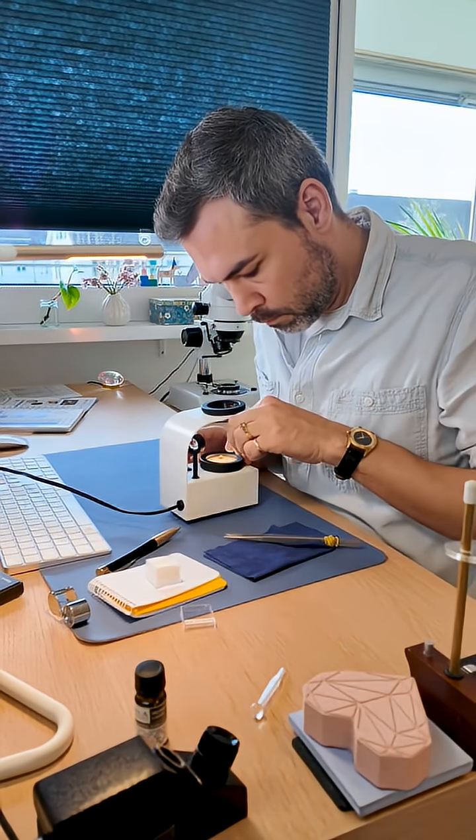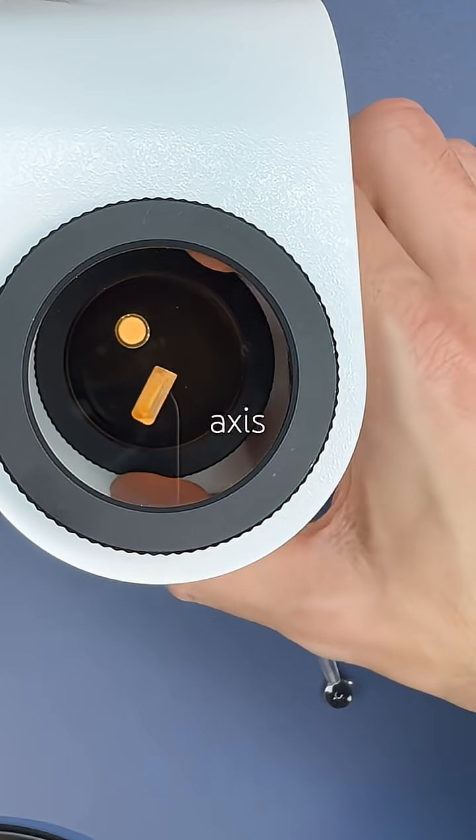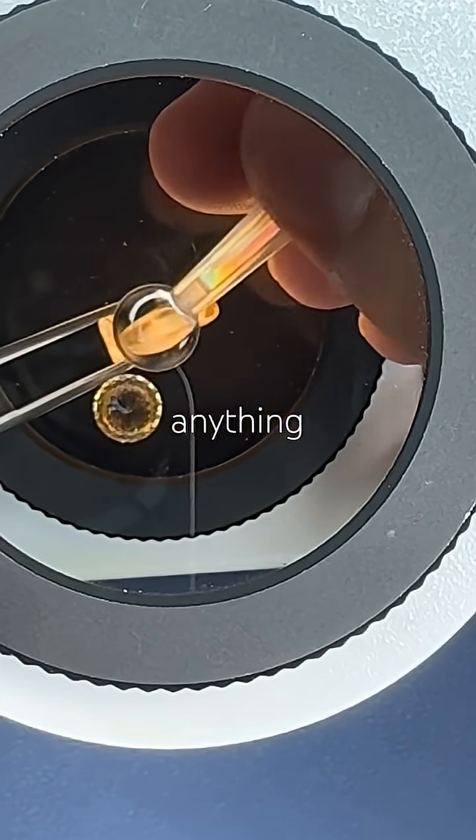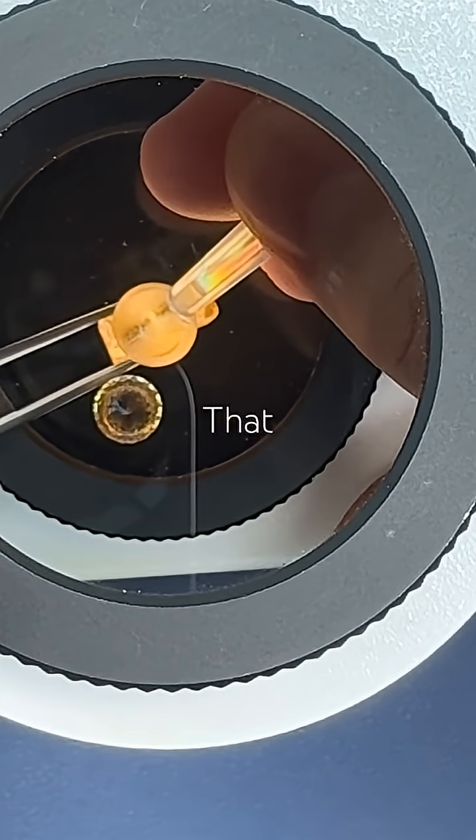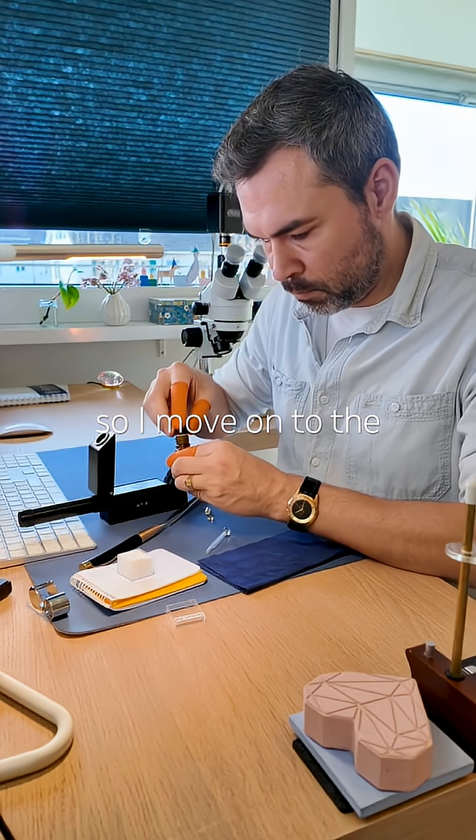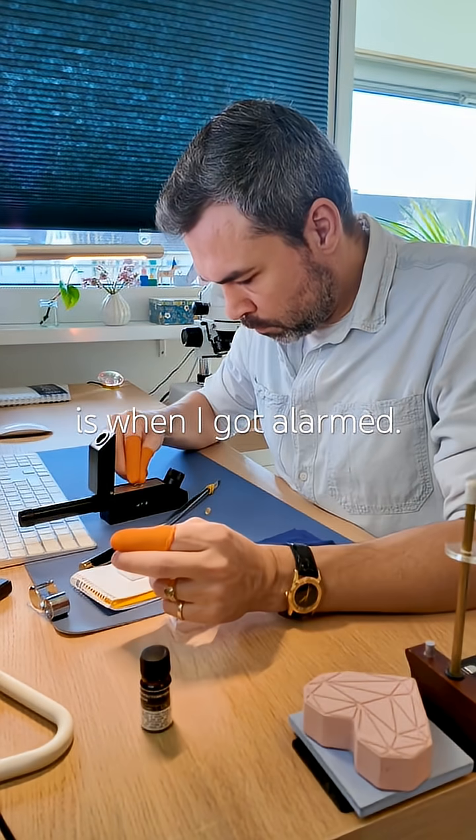Both are anisotropic. I can see a biaxial optic axis on the rough, but I can't find anything on the faceted stone. That happens sometimes, so I move on to the refractometer. That is when I got alarmed.